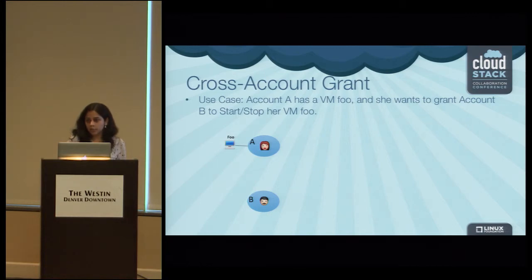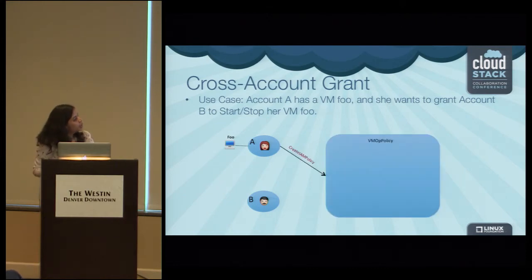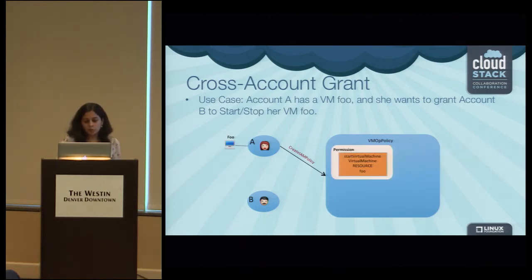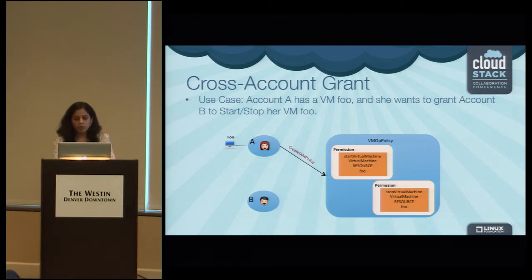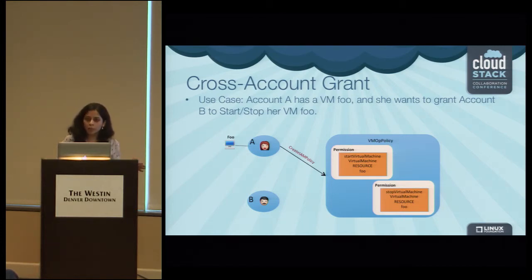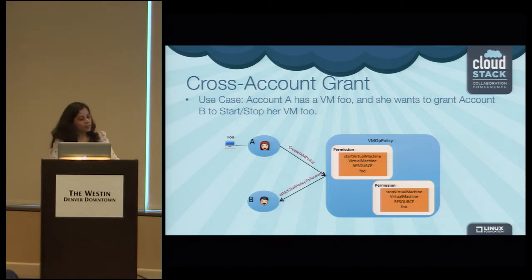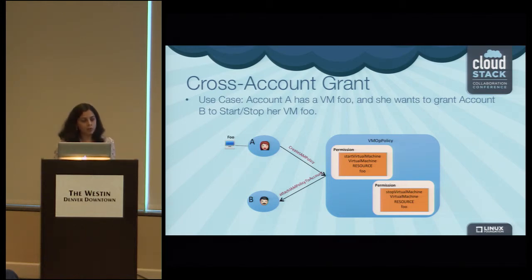Similarly, a cross-account grant can be achieved. If user A has a virtual machine named foo and wants to grant access to another account B, she creates a policy — say VM op policy — and creates permissions for start virtual machine and stop virtual machine. She specifies the scope of the permission as resource, meaning these operations can only be invoked on this particular resource ID which is foo. Then she attaches the policy directly to account B. Account B can now start and stop VM foo in addition to its own VMs.